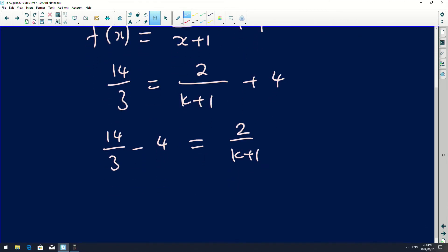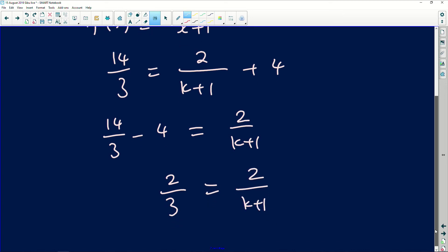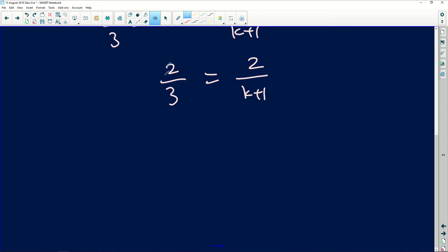We have 14/3 - 4 = 2/(k+1). If you simplify that further, you can just take your calculator and subtract there. It is just going to be 12/3. 14 minus 12 is going to be 2. So you're getting 2/3 = 2/(k+1), which will then simplify to, if the numerators are the same, then the denominators also have to be the same. So k+1 is simply equal to 3. If you simplify, your k value comes out as exactly 2.